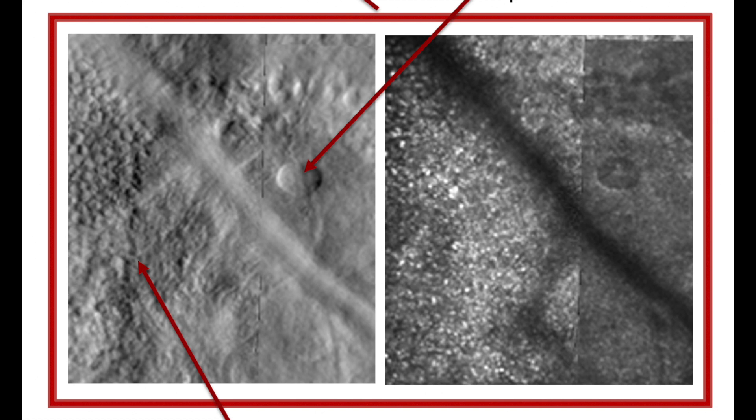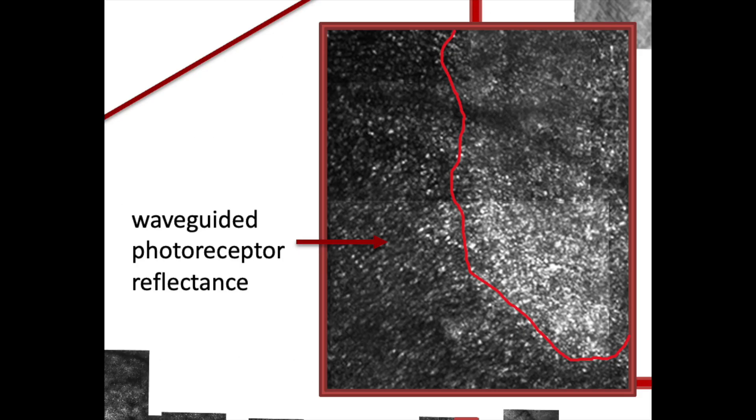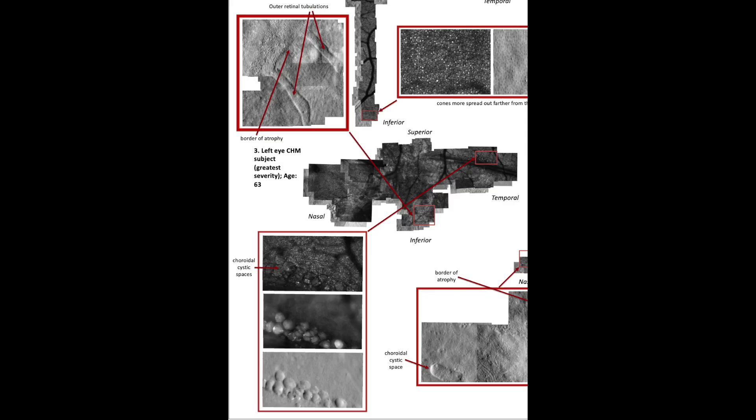You can also see in this patient the formation of tiny cysts in the choroid layer, as well as the abnormal reflectance of light by the loss of cones in the atrophied region.